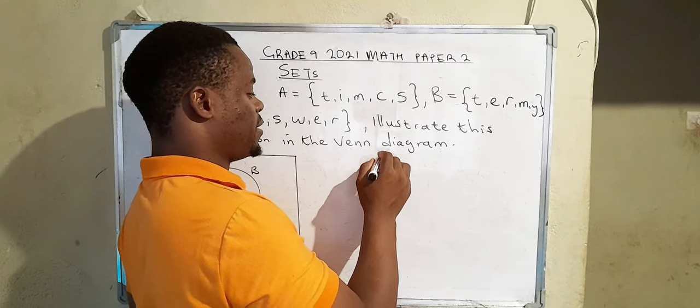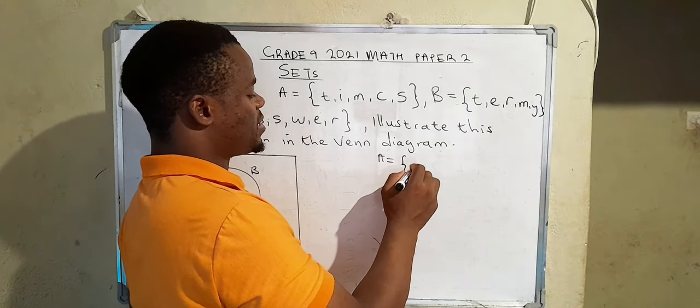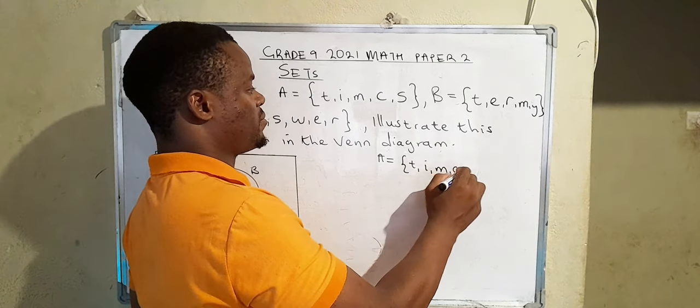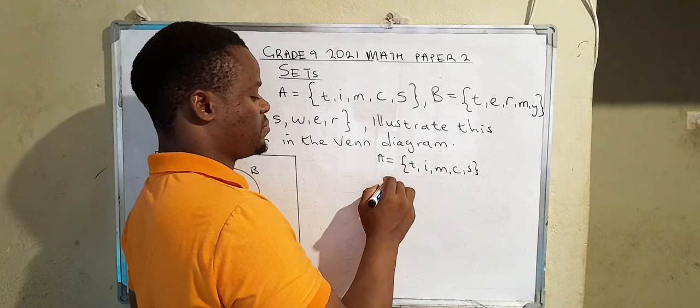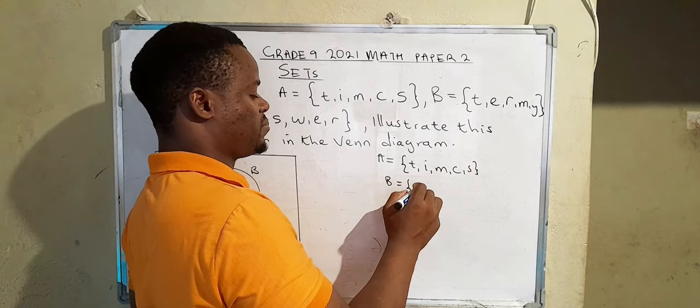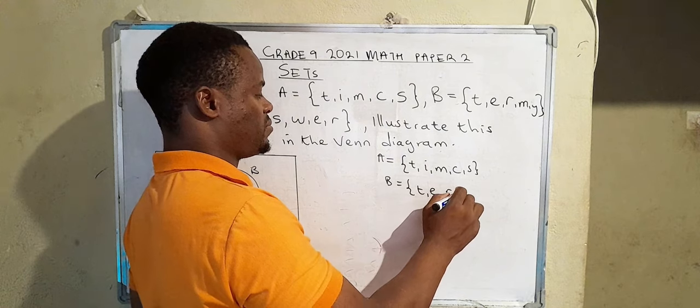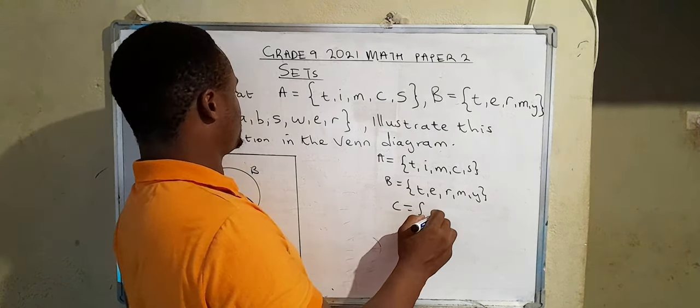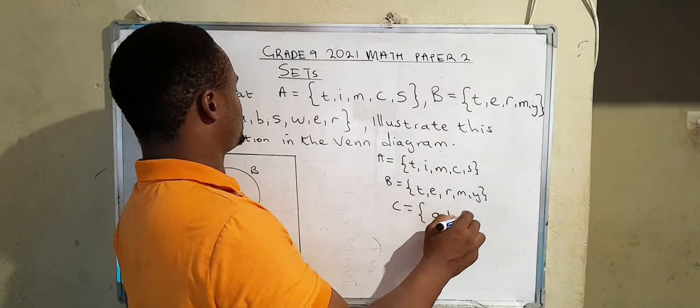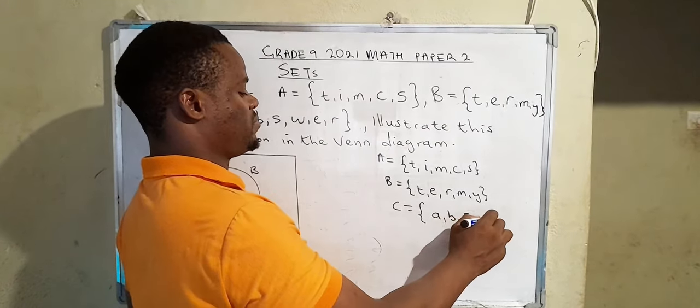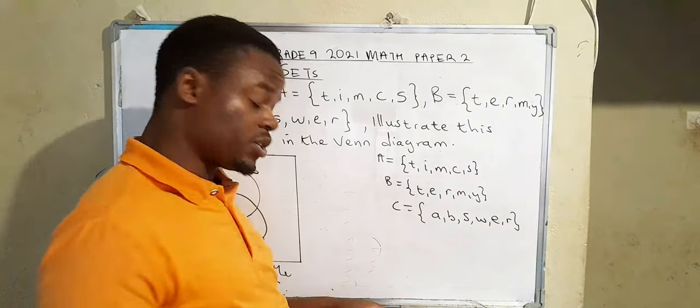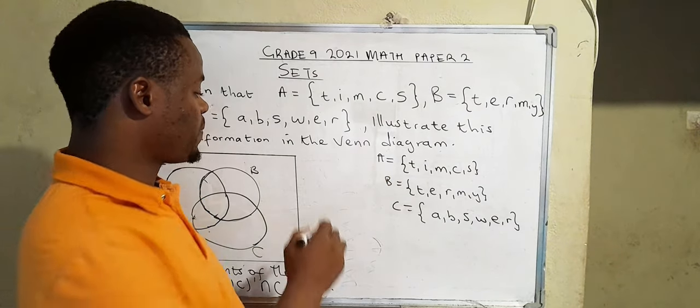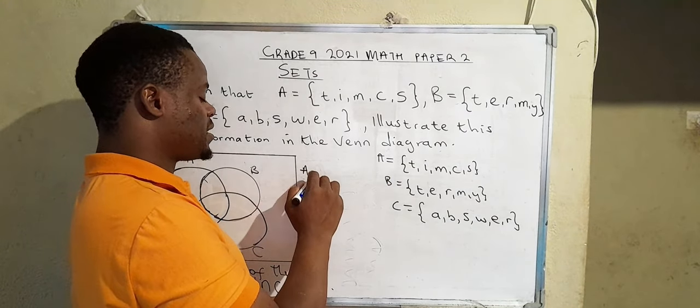So set A, you write them where you can easily see the elements. Okay, so now what you need to do is you find the intersection set of A∩B. You simply check.